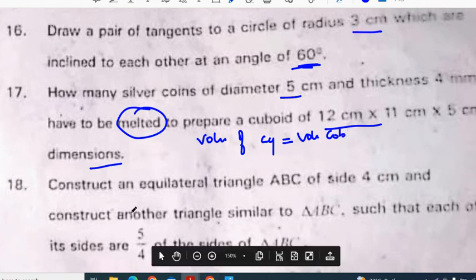Construct an equilateral triangle ABC of side 4 centimeters, construct another triangle similar to triangle ABC such that its sides are five by four of the sides of triangle ABC.